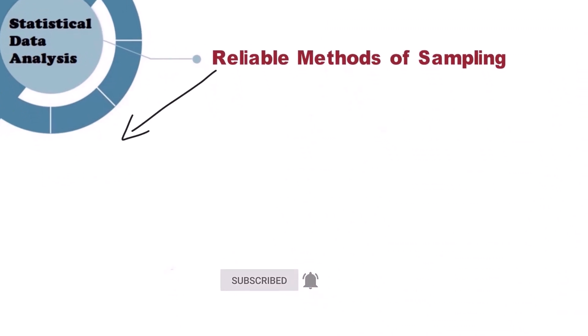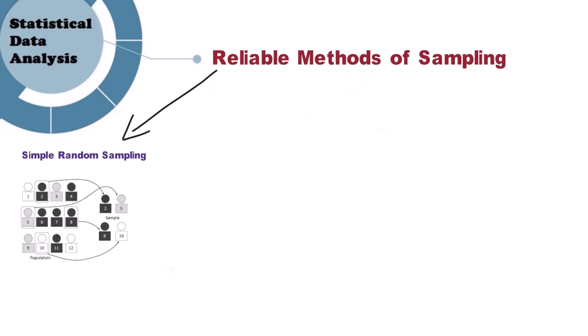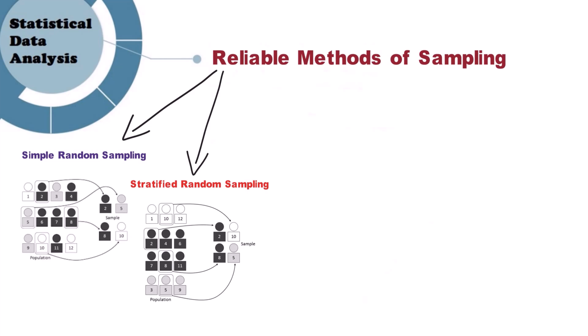A method where each member and set of members have an equal chance of being selected for the sample. Stratified random sampling: Population here is first split into groups then members are selected from each group. Cluster random sampling: The population is divided into groups and members are randomly chosen from some groups.